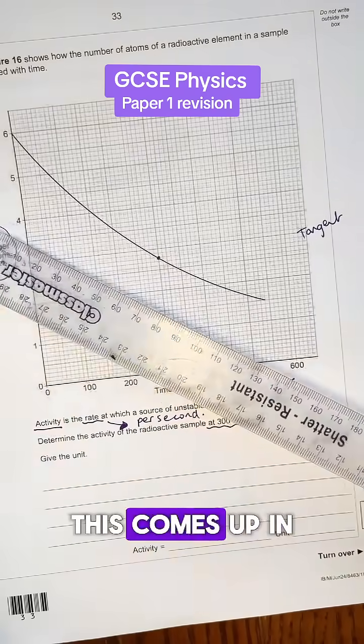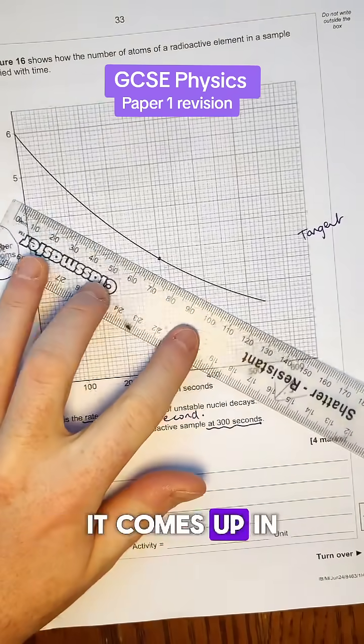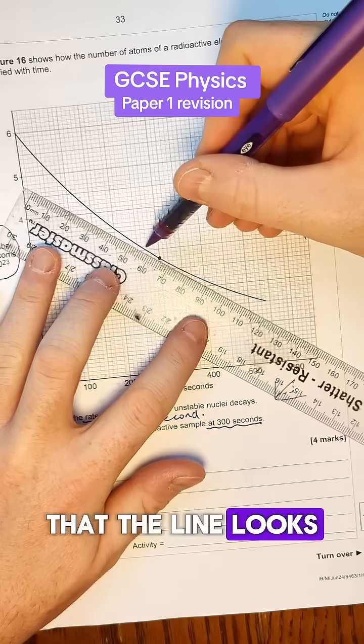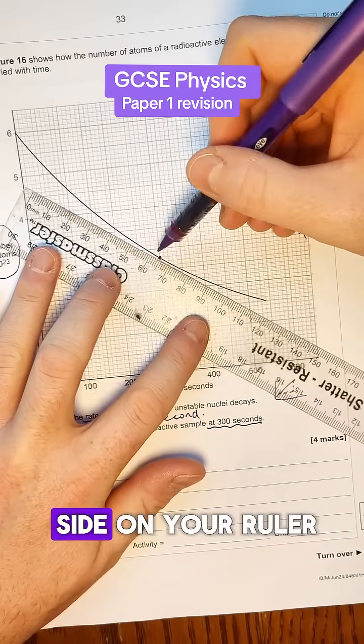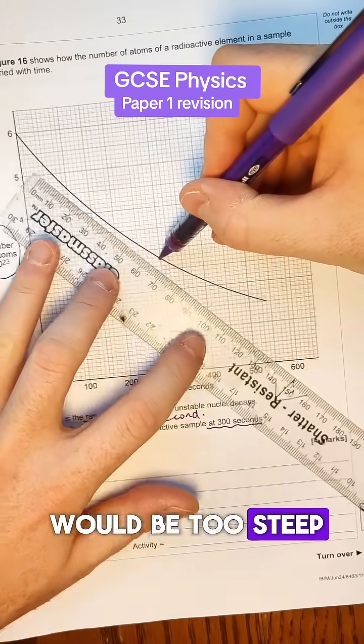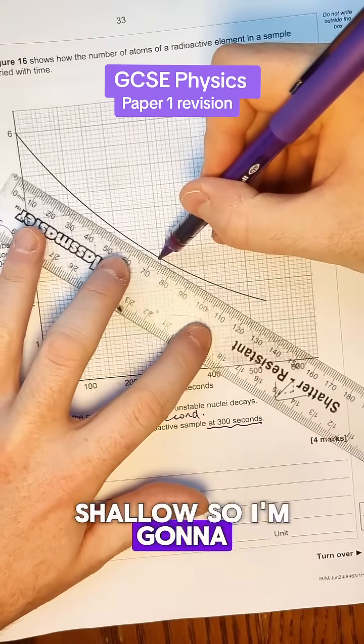So let me show you tips about drawing a tangent. This comes up in only certain topics in physics. It comes up in chemistry as well and you have to try and make sure once you've drawn your dot on that the line looks as symmetrical as you can on either side on your ruler. So something like that would be too steep, that would be too shallow. So I'm going to try and draw as best I can.